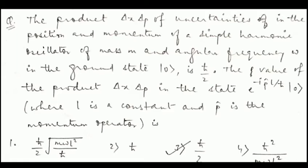You are asked the value of the product Δx·Δp in the state given by the operator e^(−ipℓ/ℏ) acting on the ground state, where ℓ is a constant and p is the momentum operator. So you are being asked to calculate what Δx·Δp should be for this new state.